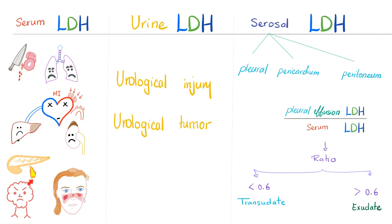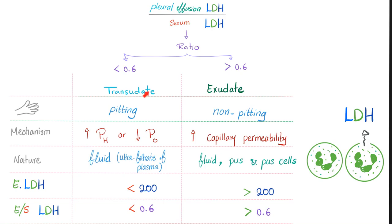All of the above is about serum LDH. You can also measure LDH in the urine — elevated urinary LDH may indicate urological injury or tumor. There is also serosal LDH, measured in pleural, pericardial, or peritoneal effusions. The ratio of effusion LDH to serum LDH helps distinguish transudate from exudate. An effusion LDH less than 200 IU/L and effusion-to-serum LDH ratio less than 0.6 suggests transudate; greater than 0.6 suggests exudate.